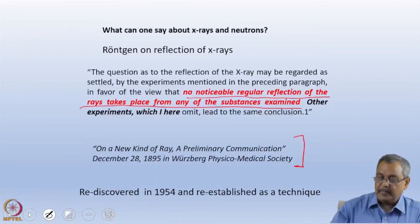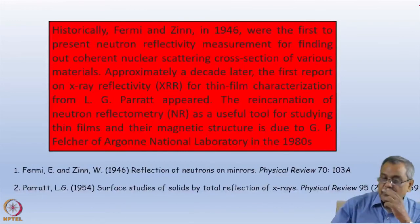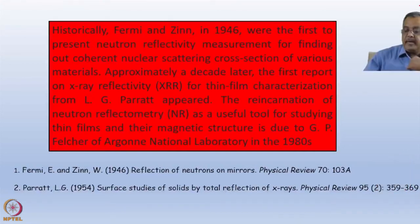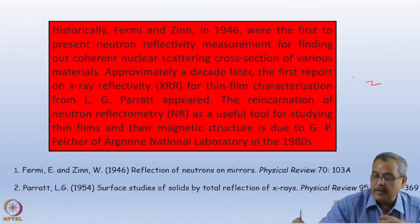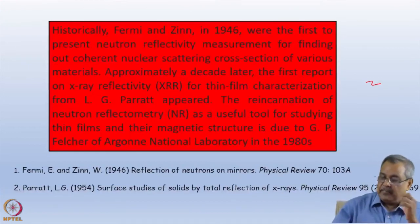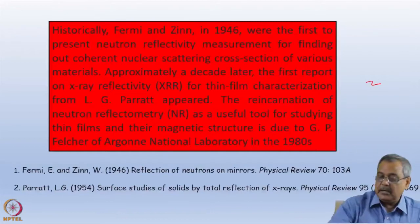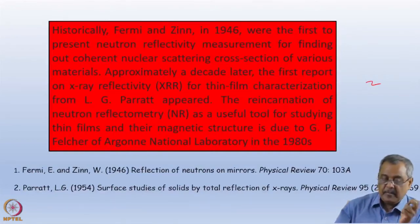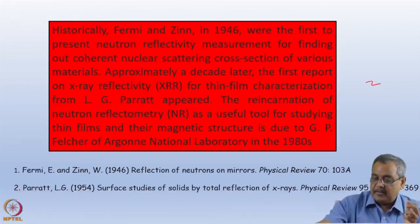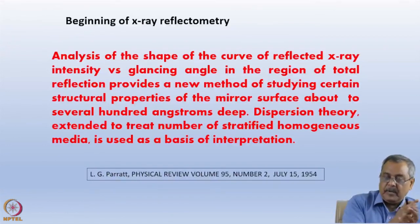This technique was rediscovered in 1954 and re-established. As far as neutrons are concerned, historically, Fermi and Zinn in 1946 were the first to present neutron reflectometry measurements for finding out coherent nucleus scattering length. And approximately a decade later came the first report on X-ray reflectivity — following Röntgen's comment, later in 1954 we get the classic paper by Parratt on surface studies of solids by total reflection of X-rays.